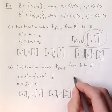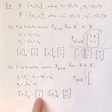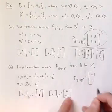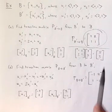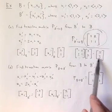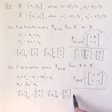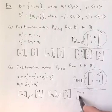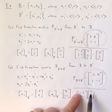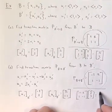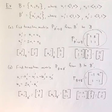Finding the coordinate vectors: U1 relative to B prime is negative U1 prime plus U2 prime, giving column vector negative 1,1. And U2 relative to B prime is 2U1 prime minus 1U2 prime. So the transition matrix from B to B prime has columns negative 1,1 and 2, negative 1. Checking: multiplying this matrix by 5,3 gives negative 5 plus 6 equals 1, and 5 minus 3 equals 2 — exactly the coordinate vector 1,2 we wanted.